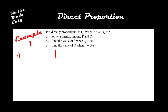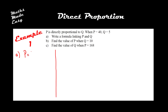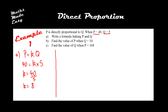What an examiner would expect you to do: when you see 'directly proportional to,' you write P equals K times Q. We always put the letter K for the constant of proportionality. We then substitute in our two values — P is 40 and Q is 5 — giving us 40 equals K times 5. In which case K equals 40 divided by 5, so K equals 8.